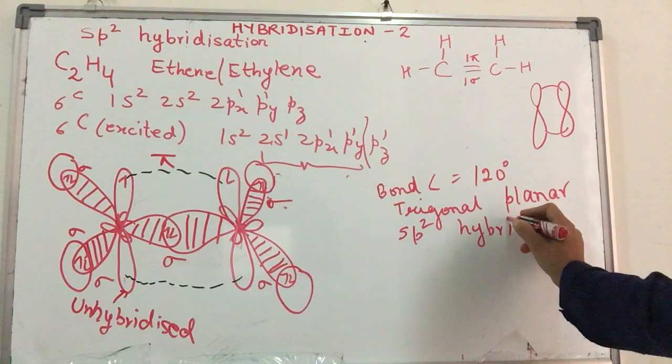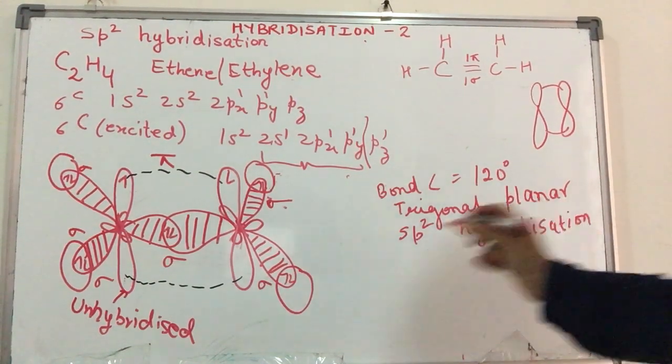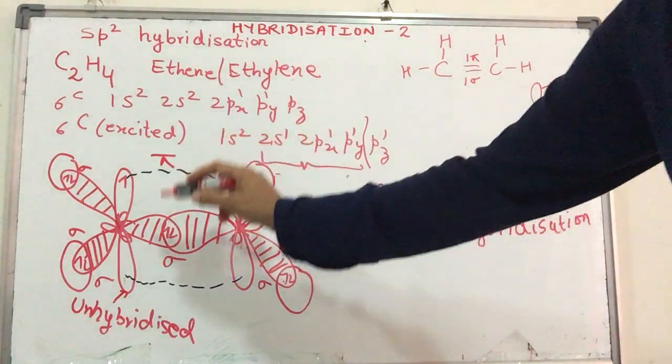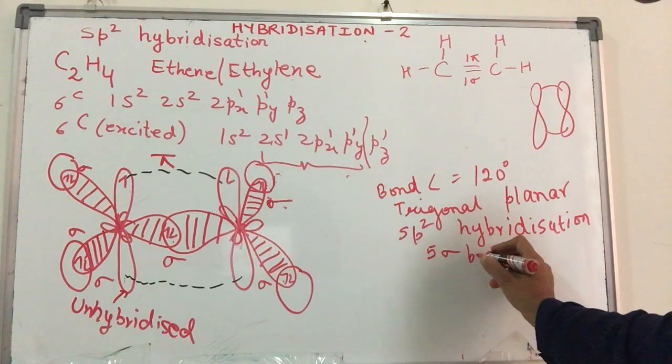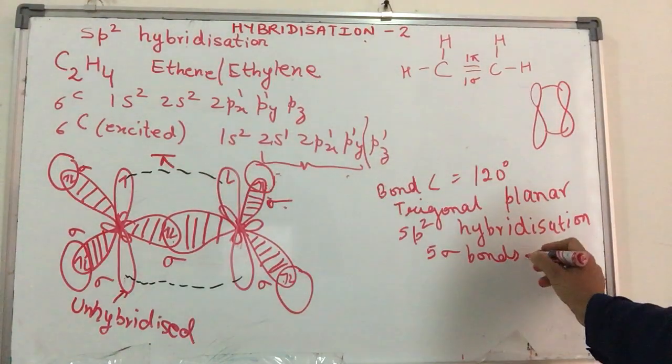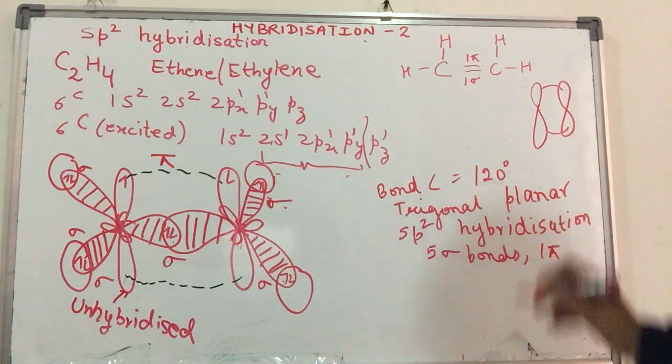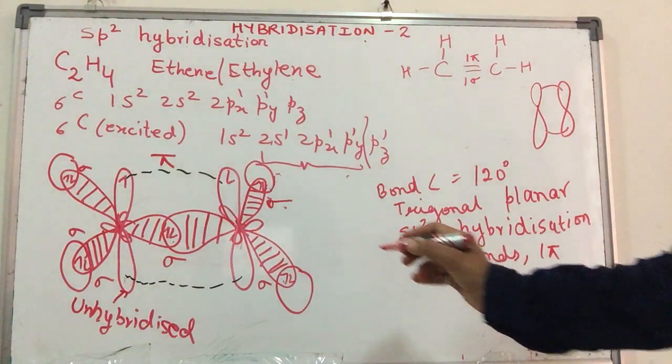How many sigma bonds are there? Let us total them up. 1, 2, 3, 4 and 5. Five sigma bonds. How many pi bonds? There is only one pi bond over here and the type of overlap that is involved. Now we need to see over here.